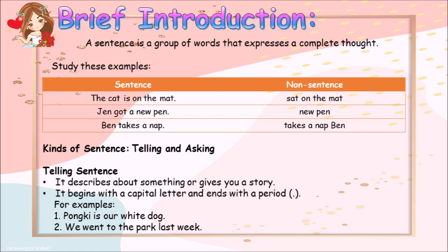A telling sentence describes about something or gives you information. It begins with a capital letter and ends with a period. For example: 'Punky is our white dog.' 'We went to the park last week.'